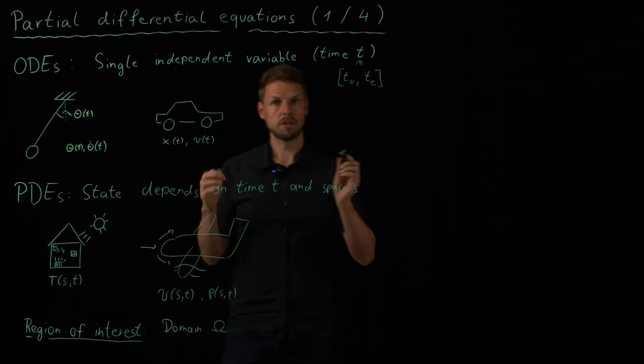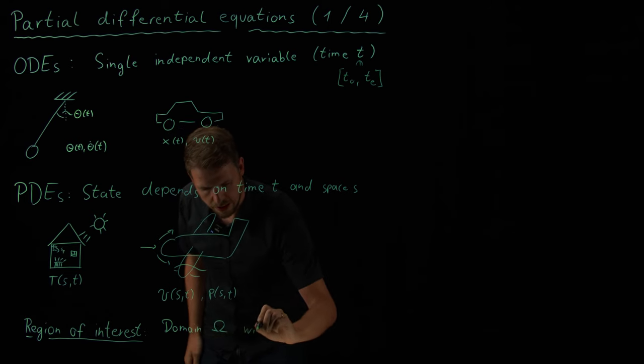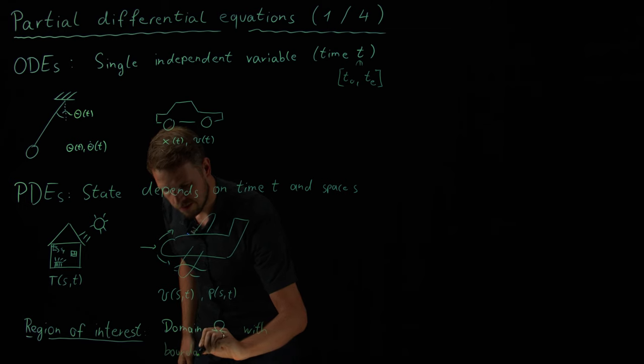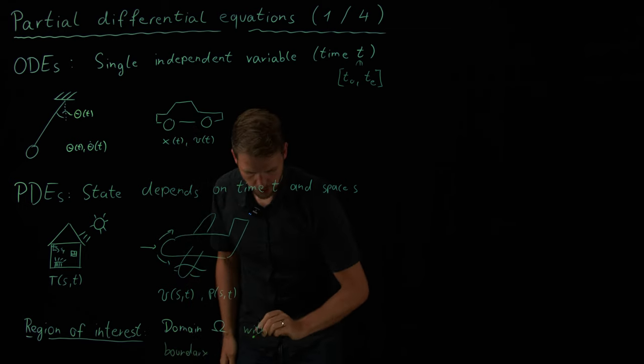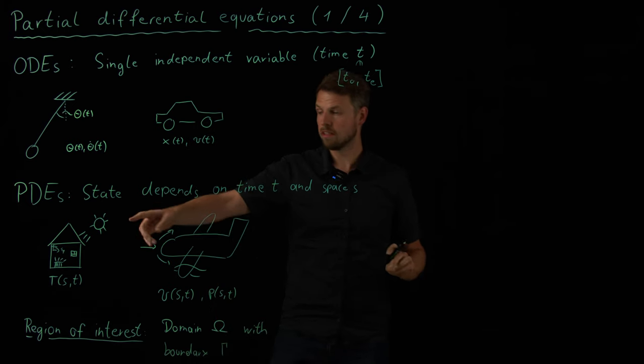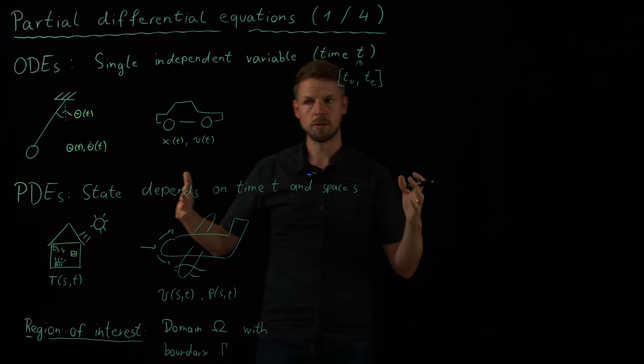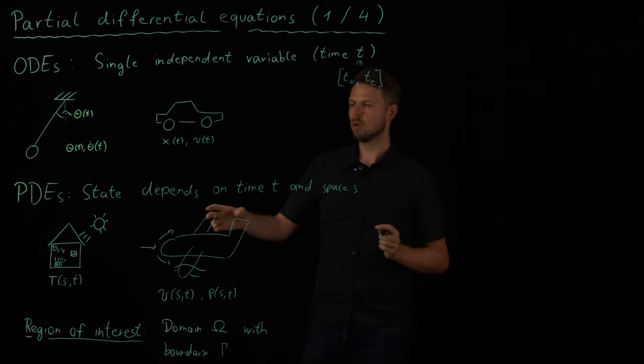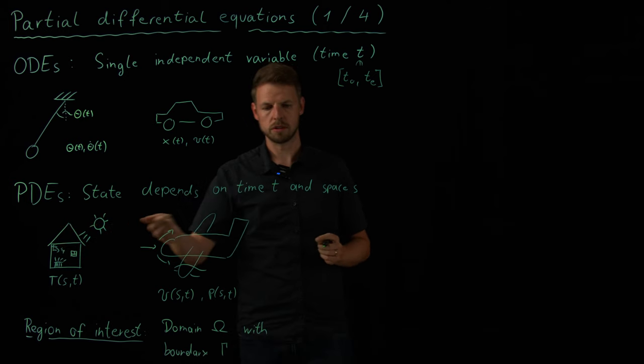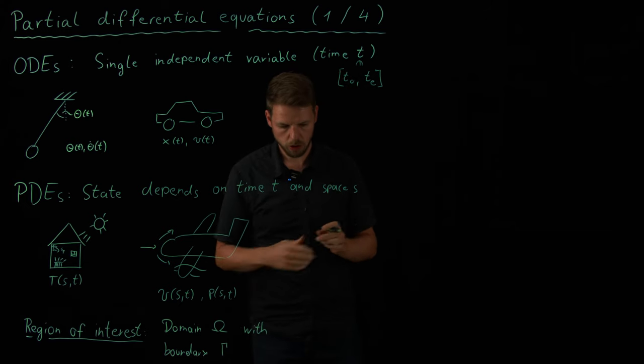And what's also very important and different is we have a boundary, which we call usually gamma. So obviously, it's very important if the temperature outside is hot. So the walls are maybe warmer. Or if we're in the winter and it's cold. So the temperature is very obviously influenced by the boundary conditions. And so this is how PDEs work. And this is why they are more complicated.